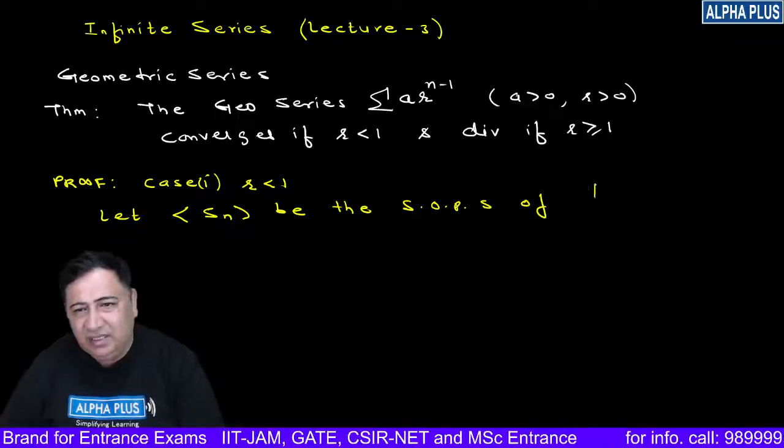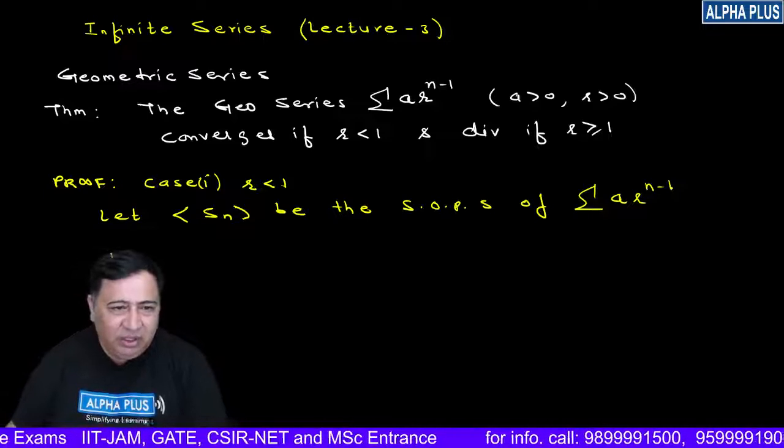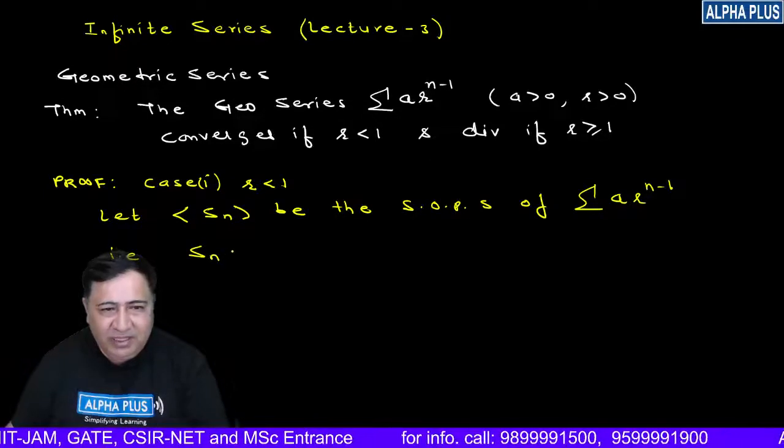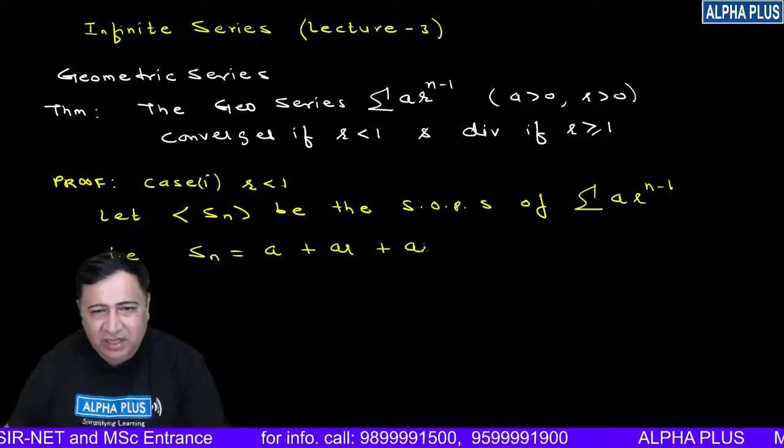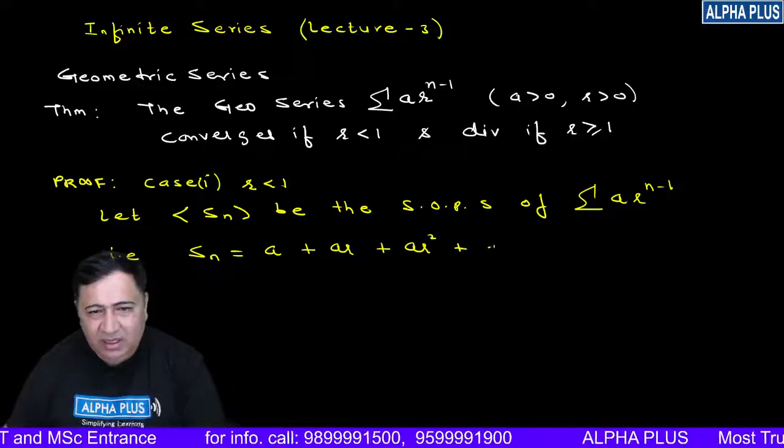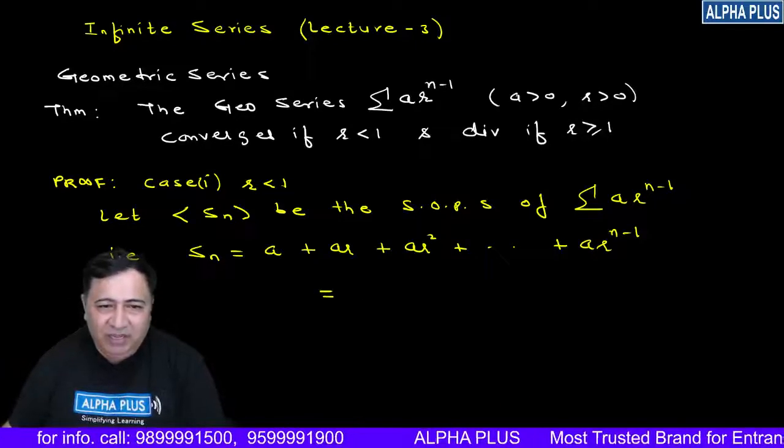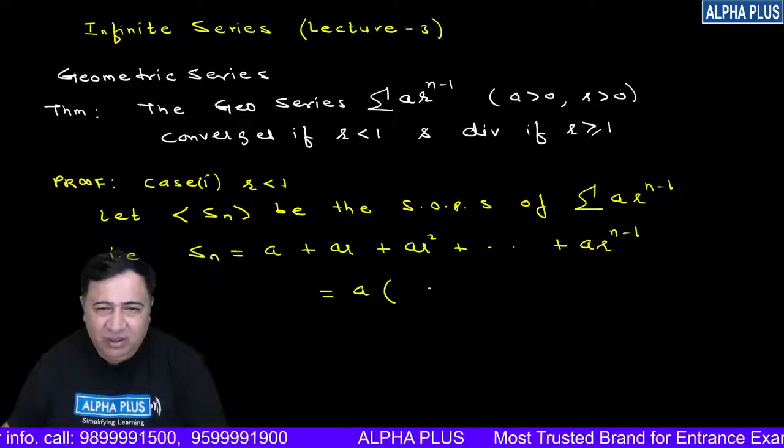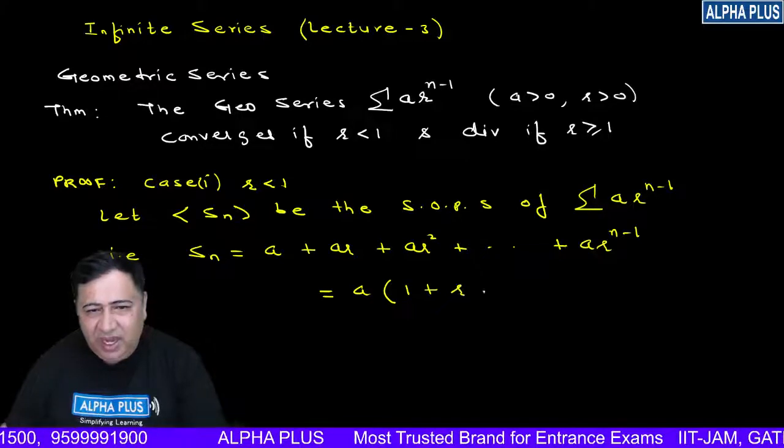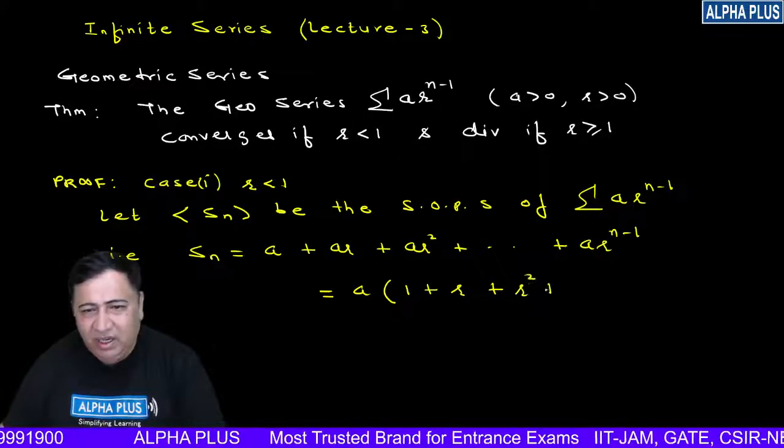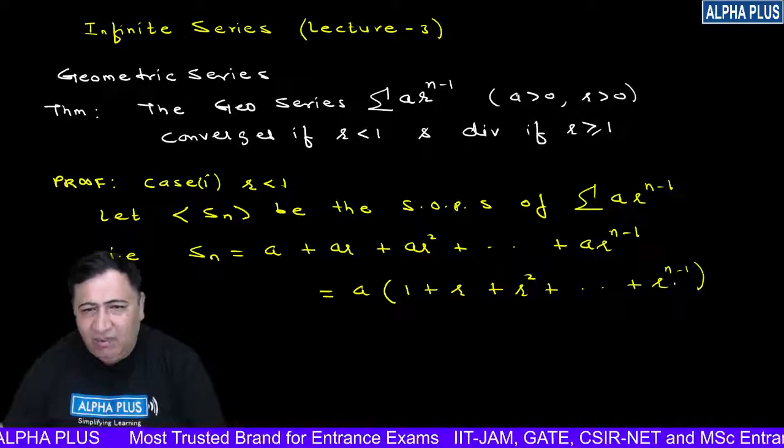So write Sn. How will you write it? Sn will be written as a + ar + ar² and so on like this, ar^(n-1). Can we find the sum of the series? Take out a common, and it is the sum of finite GP. You remember the formula for sum of finite GP from 11th class. There are n terms.